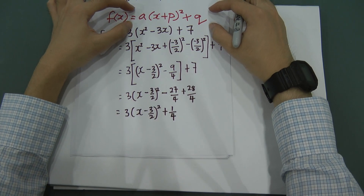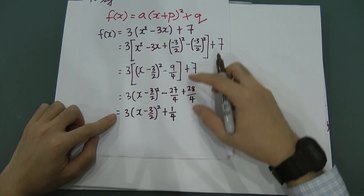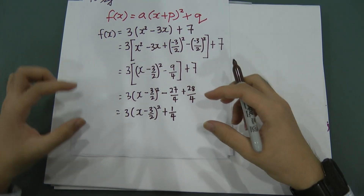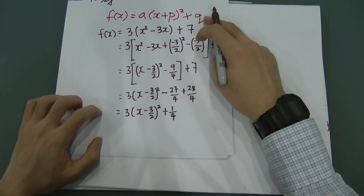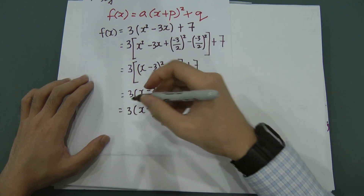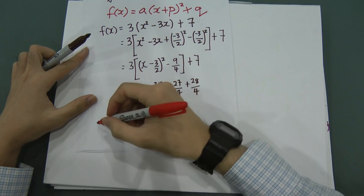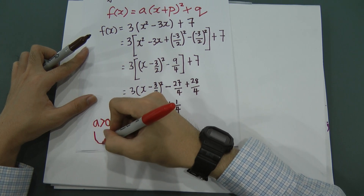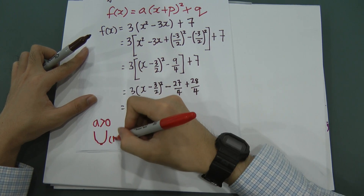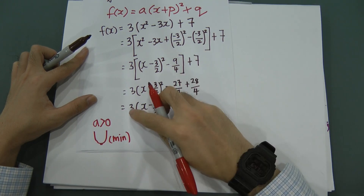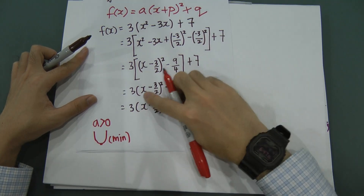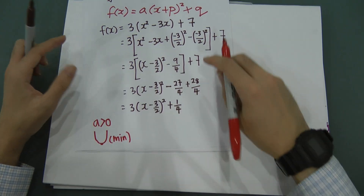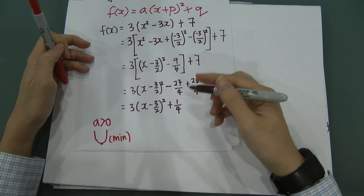This matches the general form a(x + p)² + q, so a = 3, p = -3/2, and q = 1/4. Since a = 3 is positive (a > 0), the graph is upward-opening, so we get a minimum point. When a is less than zero, you get a maximum point because the graph opens downward.